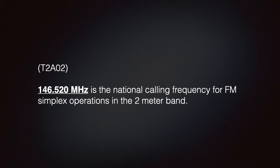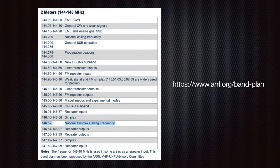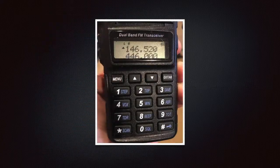We should know that 146.520 megahertz is the national calling frequency for FM simplex operation in the two meter band. We know this from the ARRL band plan for two meters, where 146.52 megahertz is listed as the national simplex calling frequency. Simplex operation means we are receiving and transmitting on the same frequency, unlike the offsets used with repeaters.